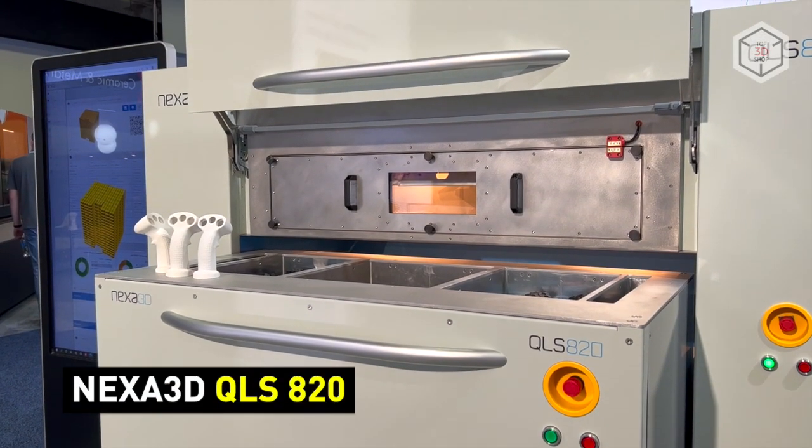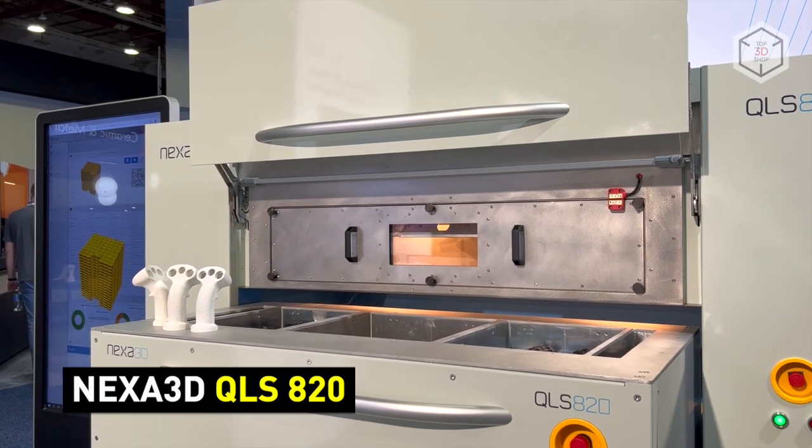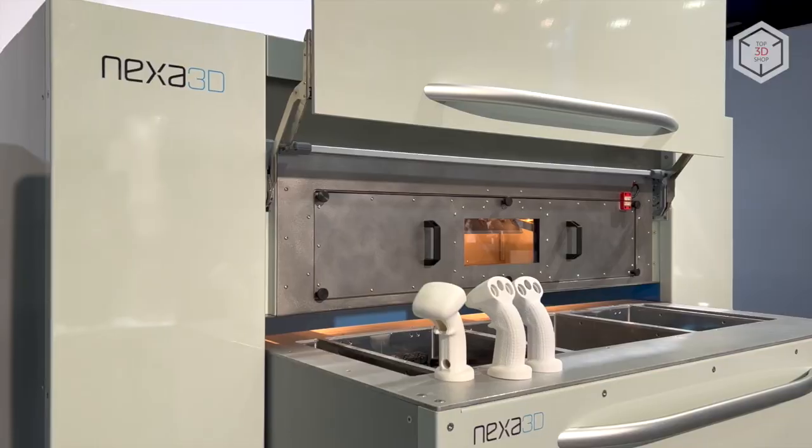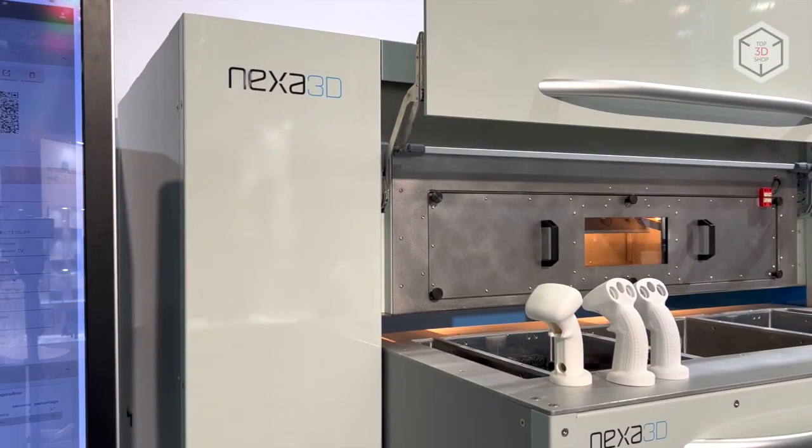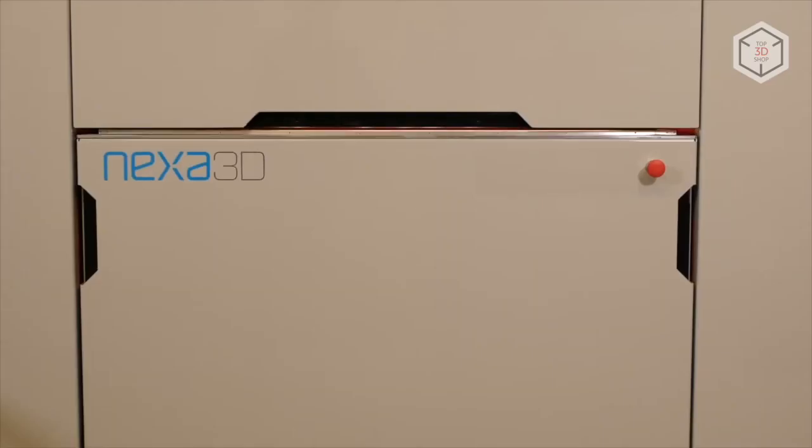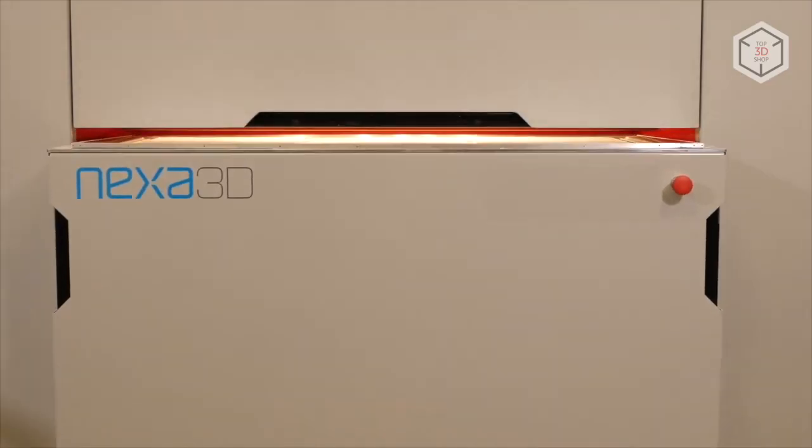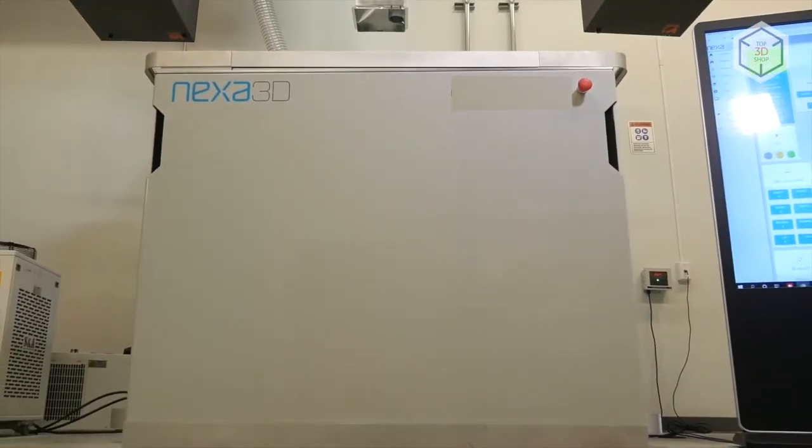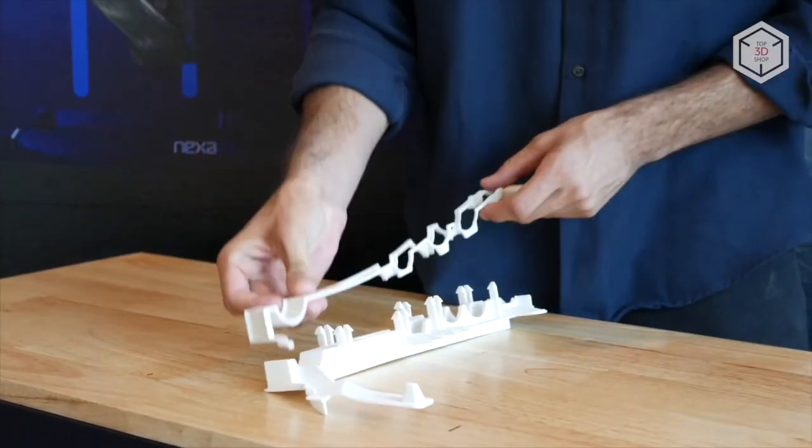The QLS 820 is the first Nexa 3D's SLS 3D printer which keeps up the company's reputation for speed offering up to four times the print speed of any traditional analog due to the new quantum laser sintering technology. Powered by four 100 watt carbon dioxide lasers the quad laser system ensures large production volumes alongside a highly automated and easily scalable printing process. The printer features a spacious build volume of 350 by 350 by 400 millimeters and the layer height of 50 to 200 microns.